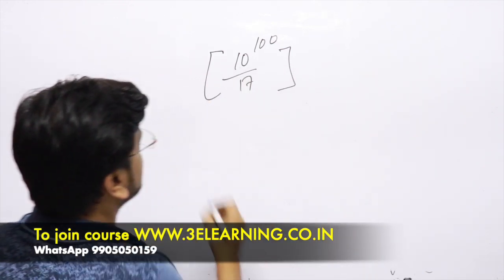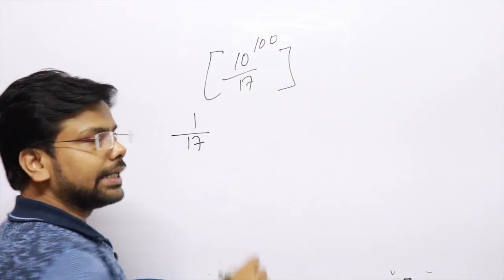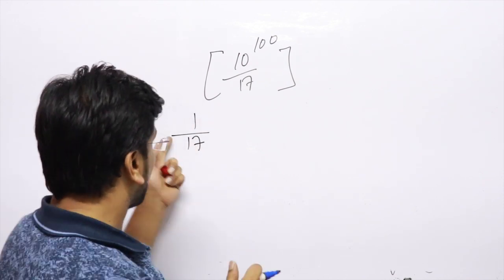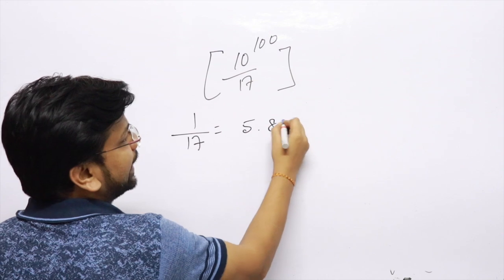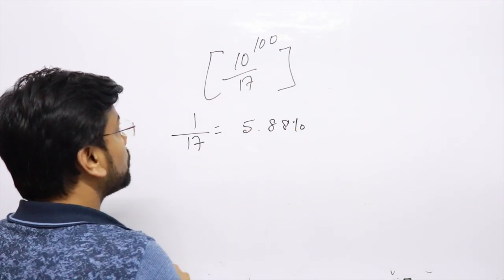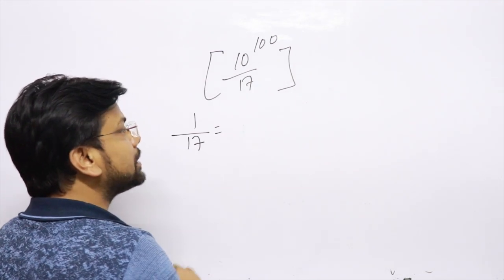So this is one of the famous fractions, 1 by 17. If you have studied percentage, 1 by 17 is a very famous percentage, which is nothing but 5.88%. This was the percentage. But what do you mean by 1 by 17 in the number system?